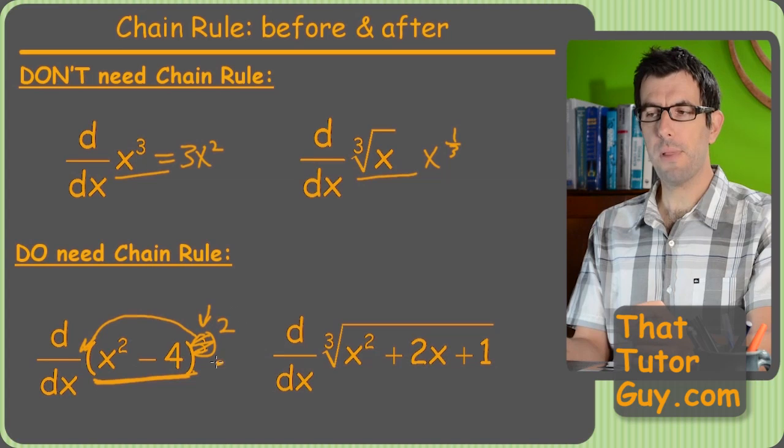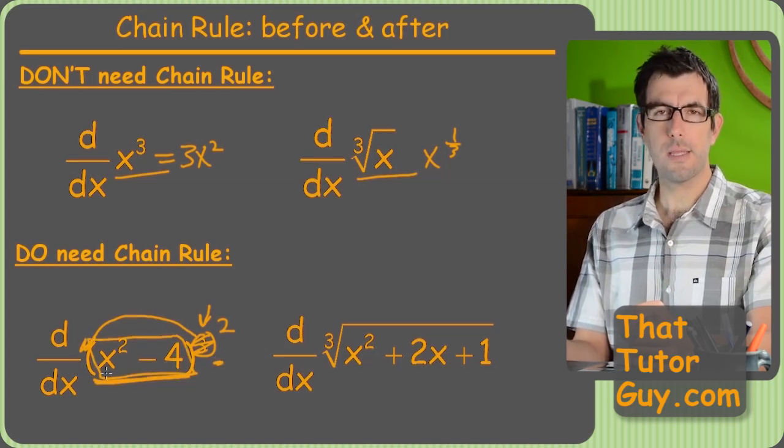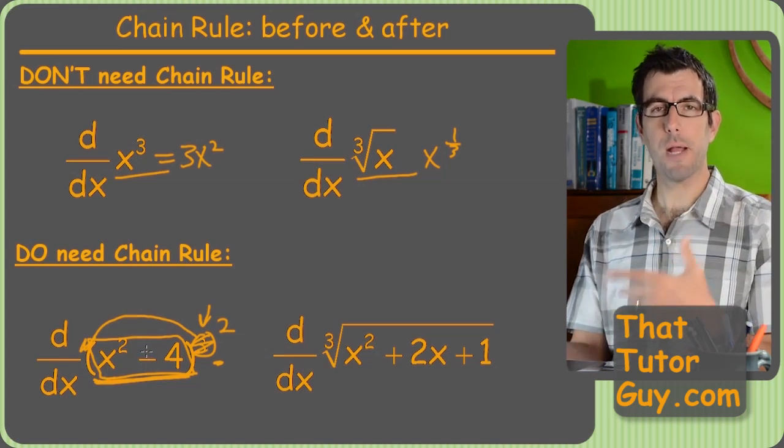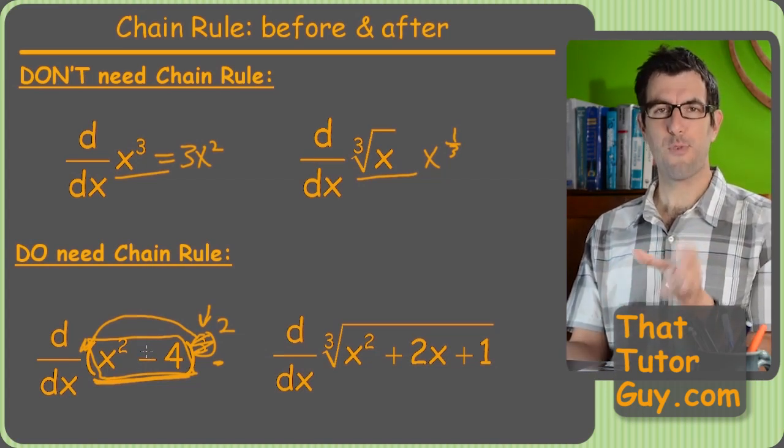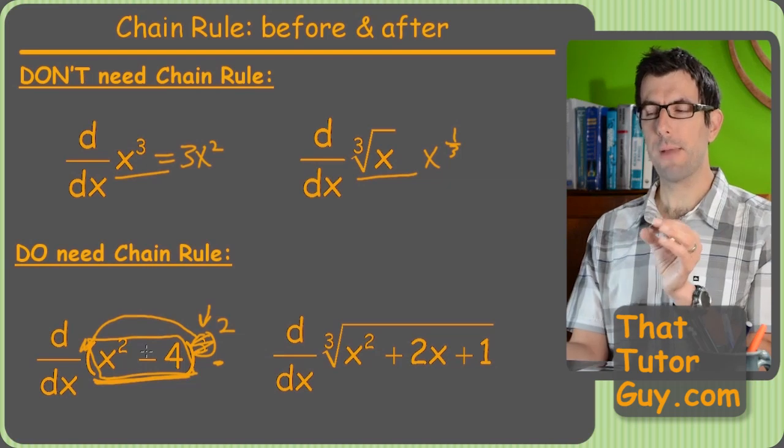But then we're going to have to multiply by the derivative of the stuff inside. And that's the thing that the chain rule adds. And it usually is when students get a problem like this wrong, the problem is forgetting that u prime. U prime is super important.